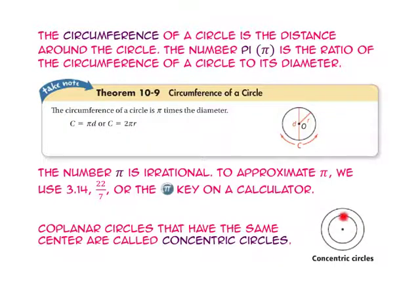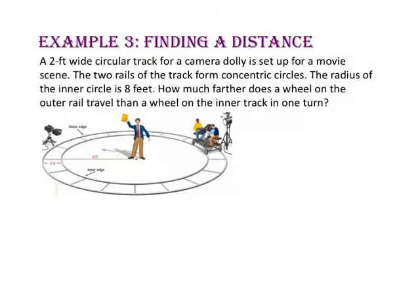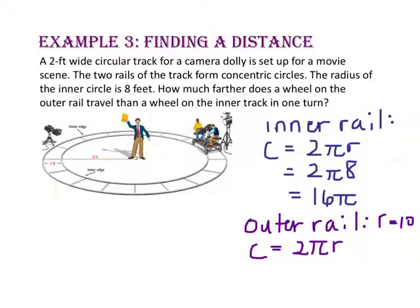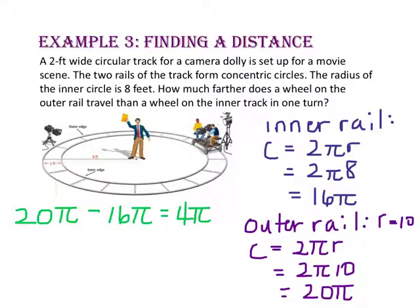Coplanar circles that have the same center are called concentric circles. In example 3, we will find a distance. A 2-foot wide circular track for a camera dolly is set up for a movie scene. The two rails of the track form concentric circles. The radius of the inner track is 8 feet. How much farther does a wheel on the outer rail travel than a wheel on the inner track in one turn? The circumference of the inner track is 2 times PI times 8, or 16 PI. The outer rail has a radius of 8 plus 2, or 10, so its circumference is 2 times PI times 10, or 20 PI. Since we are looking for how much farther the outer rail will travel, we take 20 PI minus 16 PI for a difference of 4 PI, which is approximately 12.57 feet, or about 13 feet.